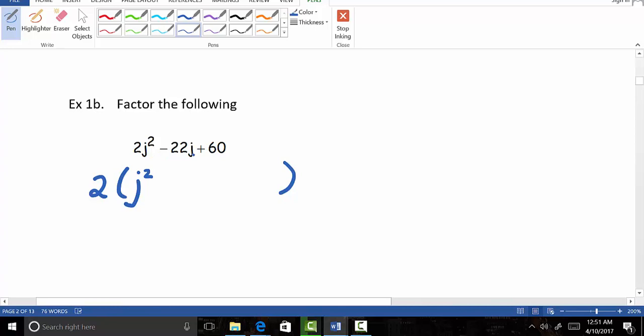If we factor this negative 22j by a factor of 2, in other words, kind of like dividing it, we know that we'd end up then with negative 11j. And if we divided or factored out a 2 from 60, we'd end up then with 30.